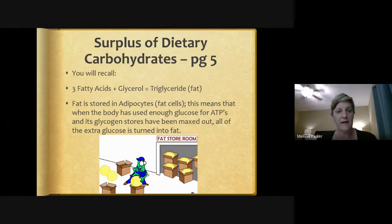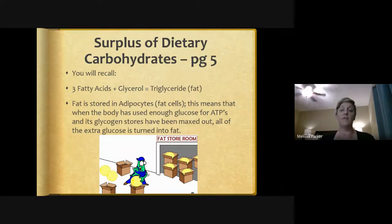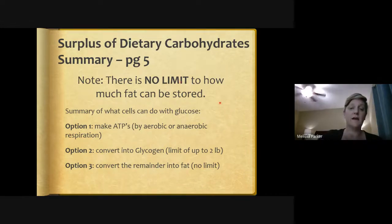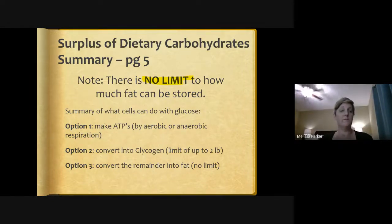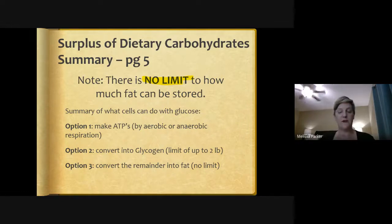Three fatty acids and a glycerol make a triglyceride. Fat is stored in adipocytes — fat cells. When the body has used enough glucose for ATP and glycogen stores are maxed out, all extra glucose gets turned into fat. There is no limit to how much fat can be stored in our body. To summarize what cells can do with glucose: make ATPs aerobically or anaerobically, convert it to glycogen with a maximum of about two pounds, or convert the remainder into fat with no storage limit.